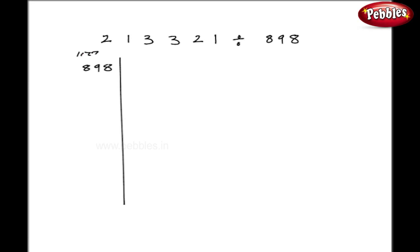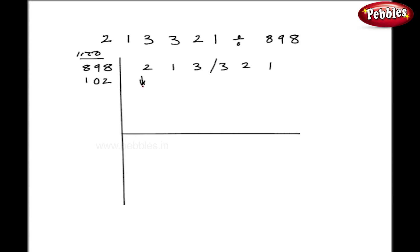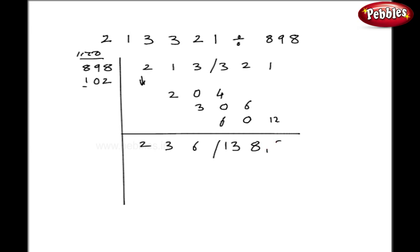Let us take one more example — we will divide by three digits. The procedure is exactly the same. I will write 898 here. My base is 1000 and my difference is 102. I write my dividend 213321. I got three zeros in my base, so I will give a stroke after three digits. As usual, I will take this 2 down. Multiply individually: 2 into 1 is 2, 2 into 0 is 0, 2 into 2 is 4. Now 2 plus 1 — I got 3. Multiply again: 3 into 1 is 3, 0, and 3 into 2 is 6. I got 3 plus 3 is 6. 6 into 1 is 6, 0, 6 into 2 is 12. Adding, I get 13 here, 8 here, and again 13. So my left-hand side is 236.